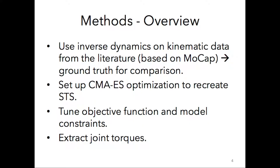I went about finding the evolution of joint torques in a sit-to-stand by first invoking inverse dynamics on kinematics data that I found in the literature, so as to use later to compare against the optimizer solution. Then I set up the covariance matrix adaptation evolution strategy optimizer, including tuning, objective functions, the model constraints, and the project code, which was derived from Carmichael's standing long jump optimizer. Finally, I extracted the joint torques from the optimized solution.